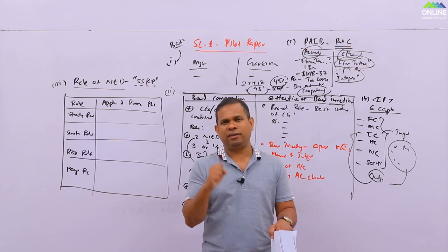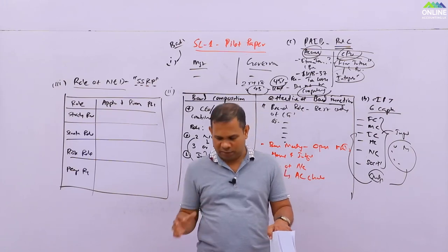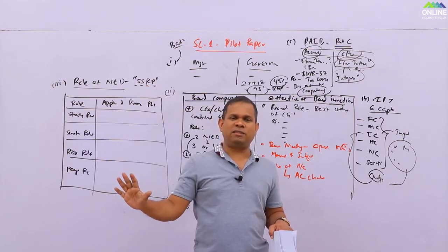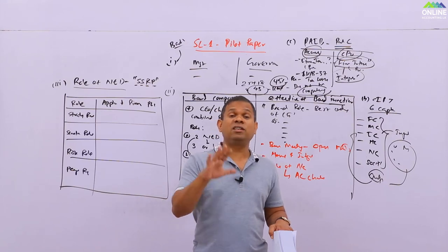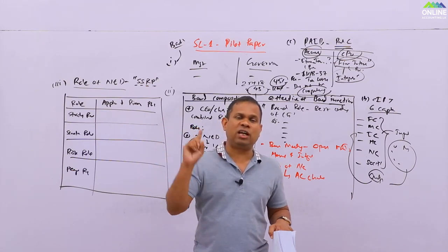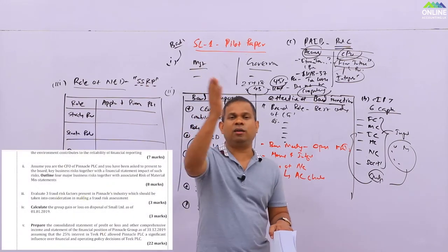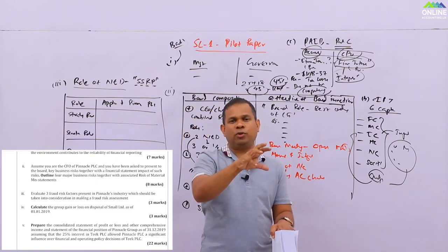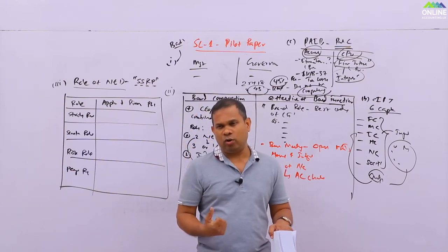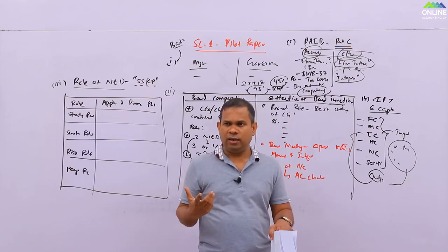You need a table with business risk on one side and risk of material misstatement on the other. Business risks include: competition risk, reputation risk, foreign exchange risk, interest rate risk, customer concentration risk, environmental risk, strategy risk, and operational risk. For each business risk you identify the associated risk of material misstatement. Roman numeral 3: evaluate three fraud risk factors using the fraud triangle — incentive/pressure, opportunity, and rationalization — from SLAUS 240. Three marks are given, so you identify three fraud risk factors from the pre-seen.